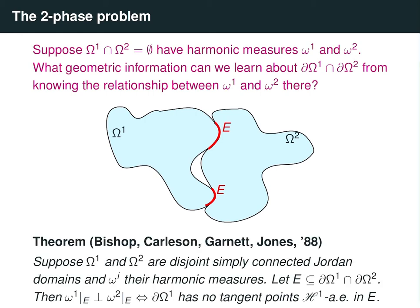Using complex analysis, this problem was studied by Bishop, Carlson, Garnett, and Jones for simply connected domains in the complex plane. They showed that if the two harmonic measures were mutually absolutely continuous on some subset E of the intersection of their boundaries, then almost every point with respect to one-dimensional Hausdorff measure in E is not a tangent point from the boundary — meaning the boundaries do not concentrate around any line as we zoom in. This also implies that if these two measures are mutually absolutely continuous, then we can find a 1-rectifiable subset of positive measure inside their boundary.